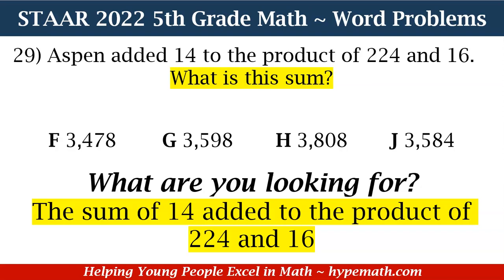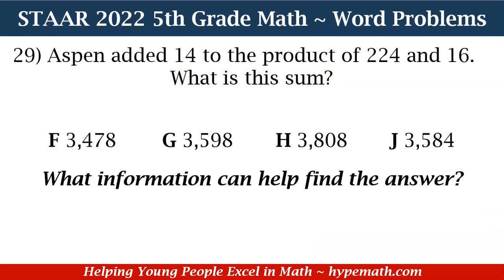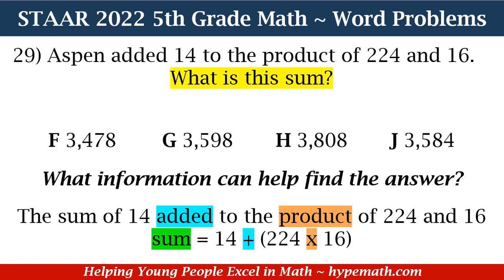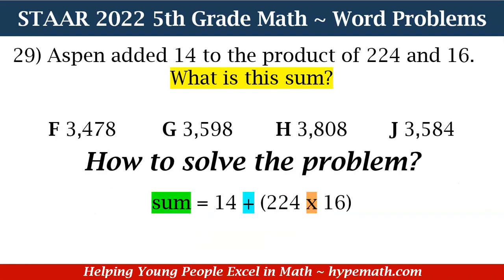Now that we know what we're looking for, what information can help us find the answer? The sum of 14 added to the product of 224 and 16. So my sum is equal to 14 plus, in parentheses, 224 times 16. You may be asking yourself: why do we need the parentheses? Because we want to make sure we are multiplying 224 and 16 first. How do we solve the problem? We have our expression.